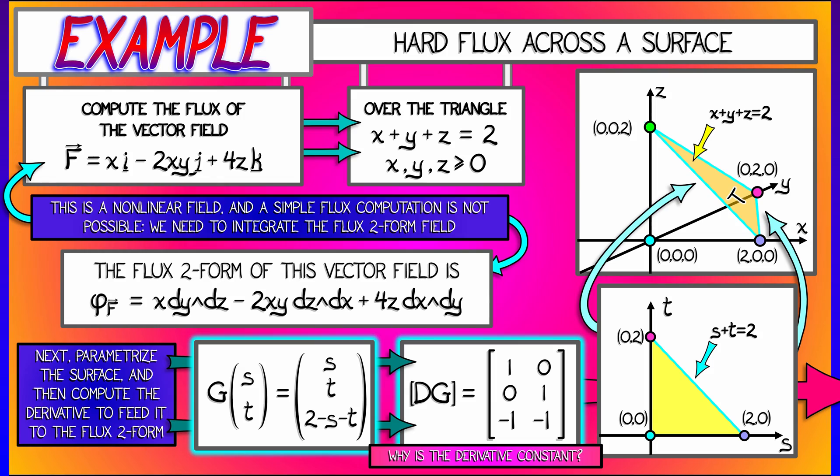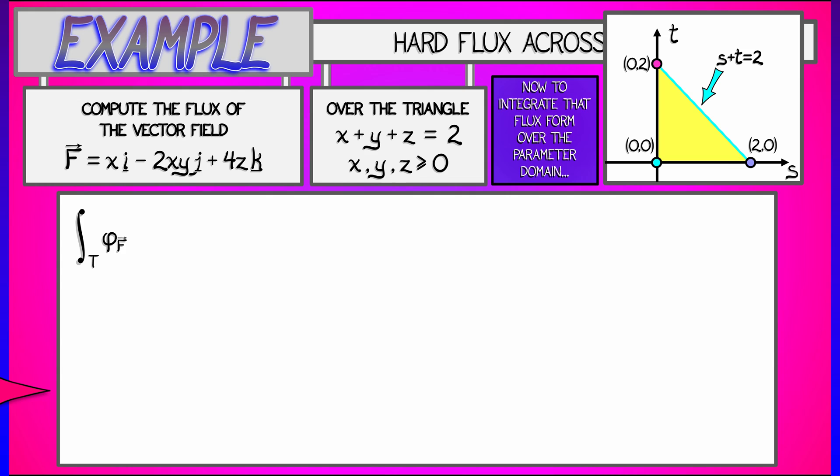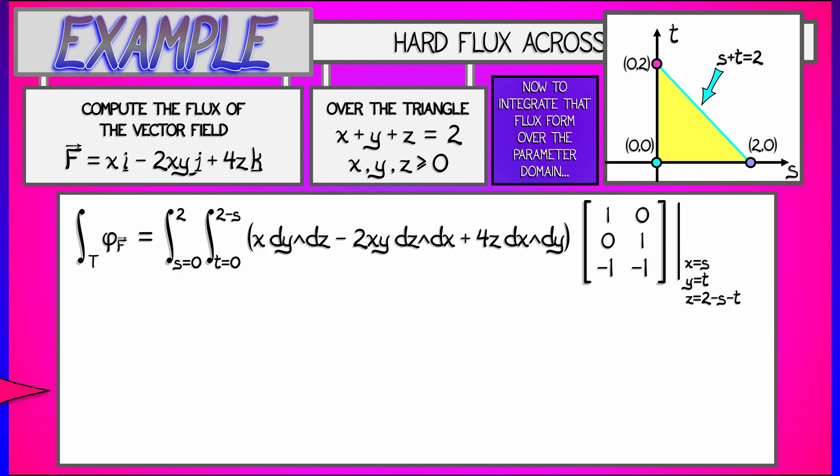Okay, let's assemble everything together and do the integral of this flux two form, φ sub f over the triangle. What we need to do is take that flux two form x dy wedge dz minus 2xy dz wedge dx plus 4z dx wedge dy. We need to feed it the derivative of g, that is the matrix with columns (1, 0, -1) and (0, 1, -1). We need to evaluate this at x equals s, y equals t, z equals 2 minus s minus t,